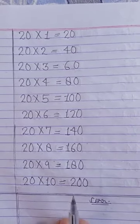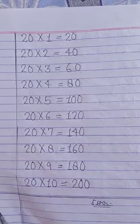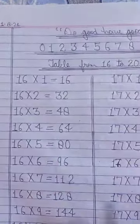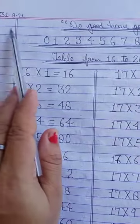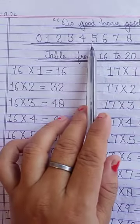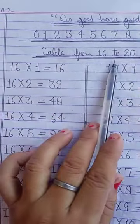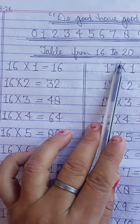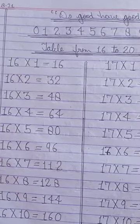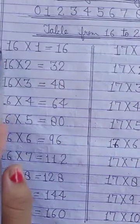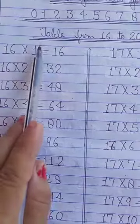Now student, you complete your copy work. That means today you open your copy and firstly you write date, then quotations, then 0 to 9 number, then table from 16 to 20. Then write your table from 16 to 20 in your classwork copy and use full box for your each number.